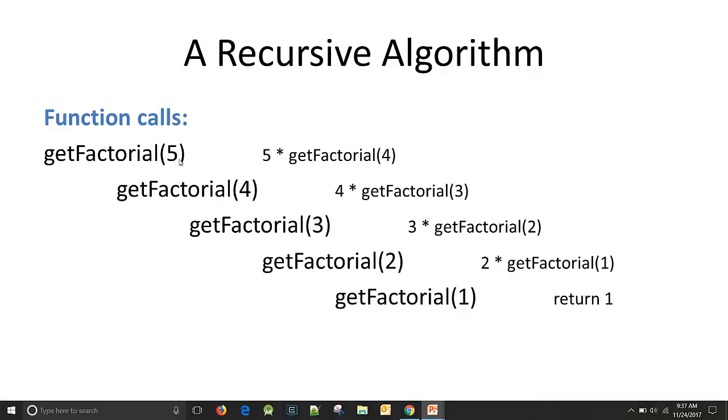So our recursive algorithm looks like this. We call get factorial on 5. The answer is 5 times get factorial of 4. We need to get the factorial of 4. So we call get factorial on 4. We pass in 4 as the argument. Well, get factorial of 4 is equal to 4 times get factorial of 3. So each time it's breaking the problem down one more step. And when we get down to the bottom, we say get factorial of 1. Well, we know what that is. That's 1. So we can return 1 at this point.